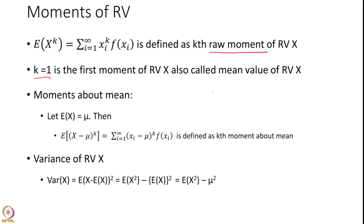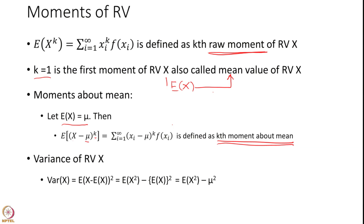If k equals 1, the first raw moment of X is simply the expected value of X, also called the mean value of X. If the expected value of X is mu, then the expected value of (x minus mu) to the power k is called the k-th moment about the mean. The variance of X is the second moment about the mean: variance of X equals E[(x minus E[X])^2].